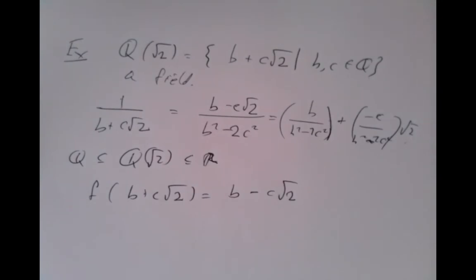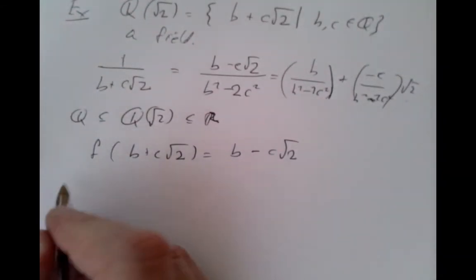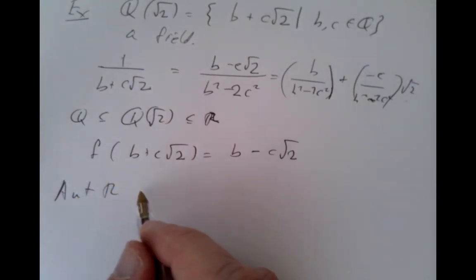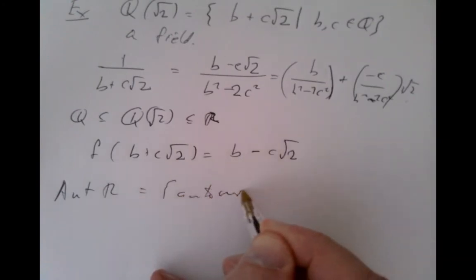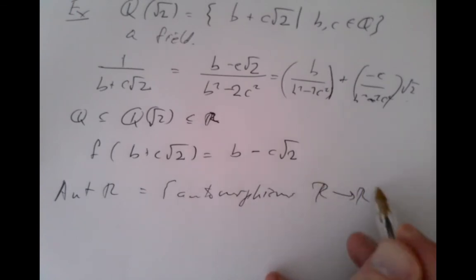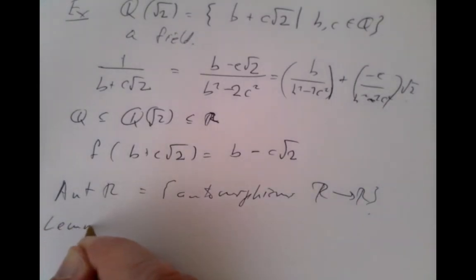Every automorphism of commutative rings will preserve all the structure of the rings — in particular, preserve reciprocals where they exist, preserve zero, preserve one if there's a commutative ring with one. Let's see some simple examples of constructing more automorphisms. We let Aut(R) be the set of all automorphisms, which are maps R → R that are ring automorphisms.